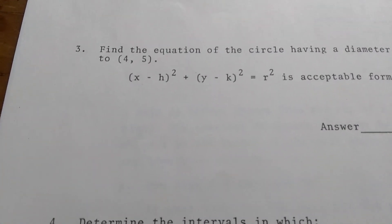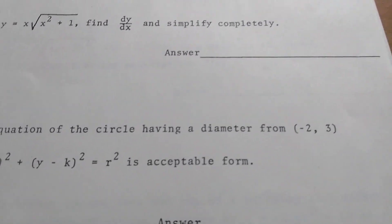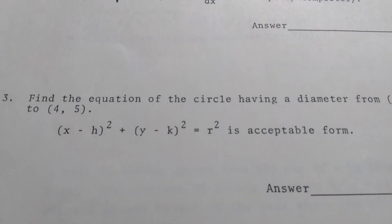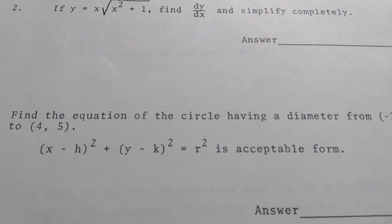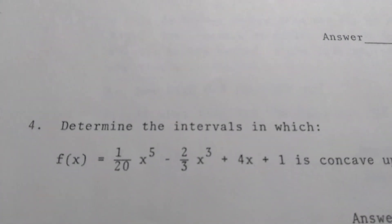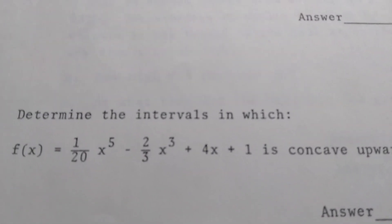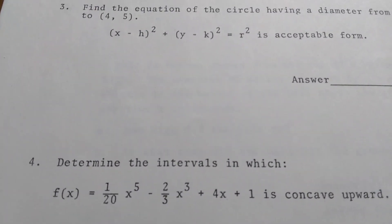So far it doesn't look that bad actually. So find the equation of the circle having a diameter from that point to that point. Okay that's not so bad. So basically you're finding the equation of a circle given the end points of the diameter. That's pretty straightforward. Determine the intervals in which this function is concave up. So you just take the second derivative and you want it to be positive. So not so bad there.